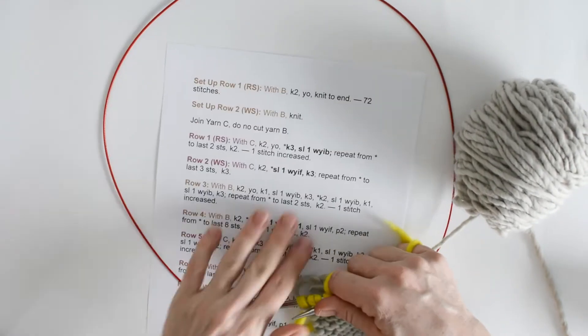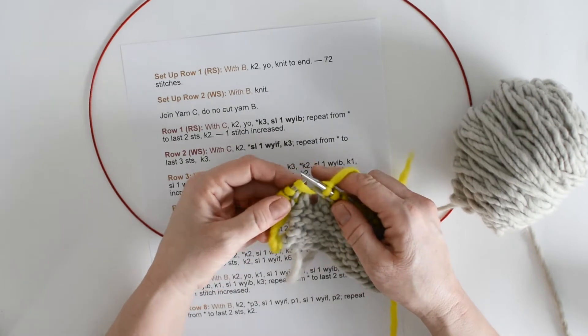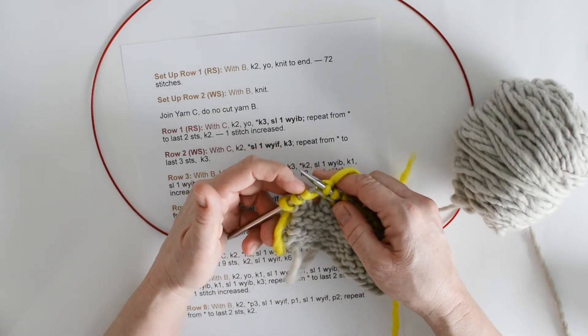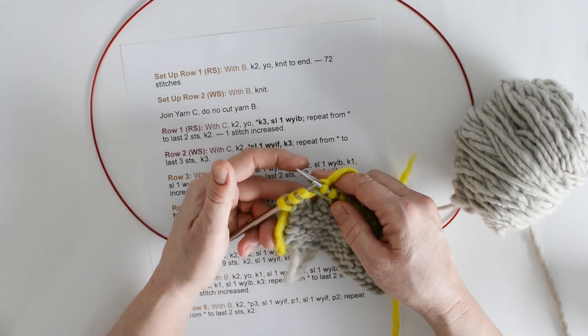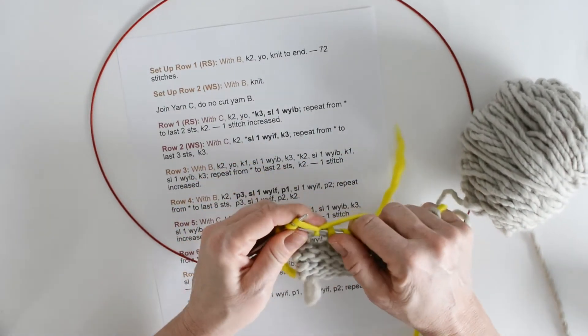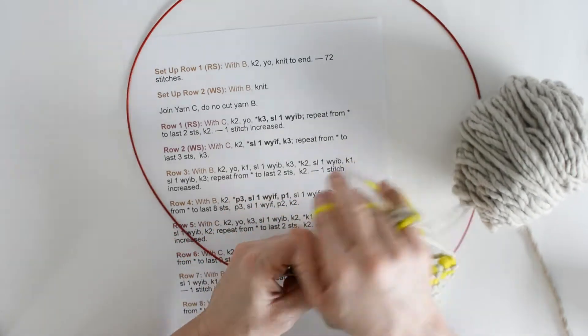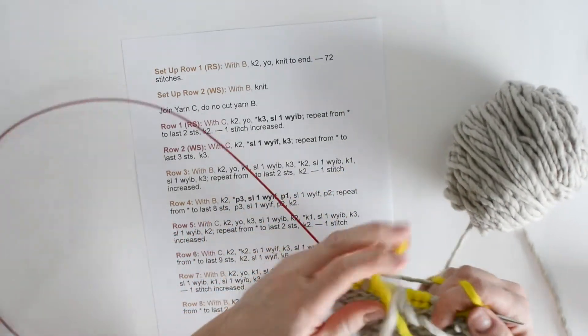We're going to bring the yarn to the front, slip the needle purlwise, bring the yarn to the back, and we're going to knit again. So we're almost at the end of that sequence, it was another knit 3. And for this row it says, repeat from start to last 3 stitches. So that's where I am, I have 3 stitches left on the needles, it was that yarn over from the last row, and the 2 beginning stitches. So we just knit those. 1, 2, and 3.